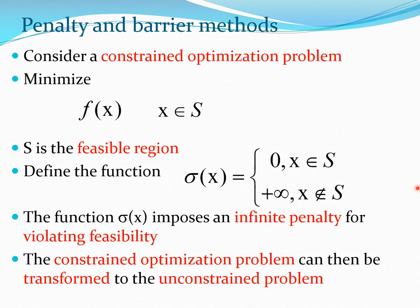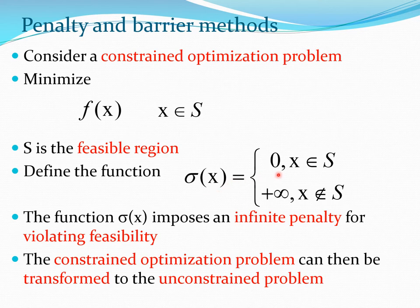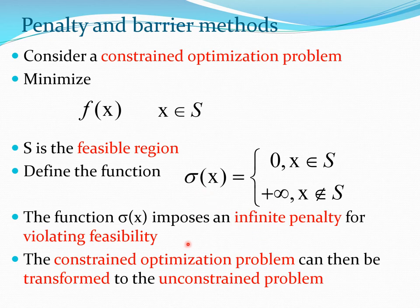Before delving into each method separately, let us look at them in a general form. Starting with the constrained optimization problem — minimize f(x) where x lies inside a feasible set S, which is the set of points satisfying the constraints. We can define a function sigma that equals 0 whenever you are inside the feasible region and takes an infinite value when you are outside, thereby imposing an infinite penalty for violating feasibility.